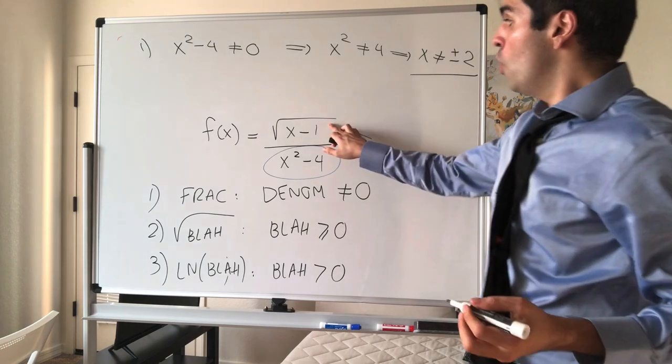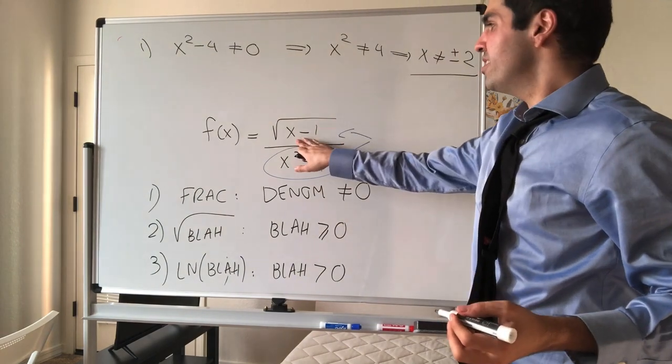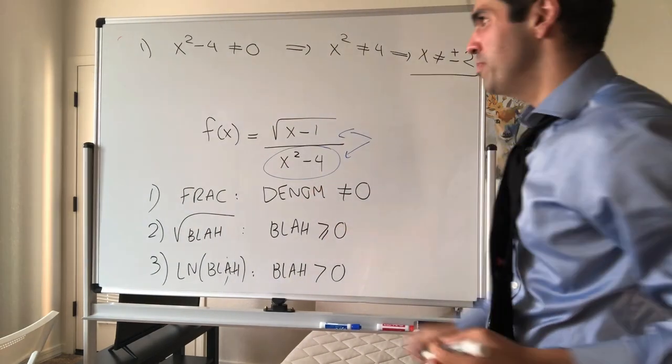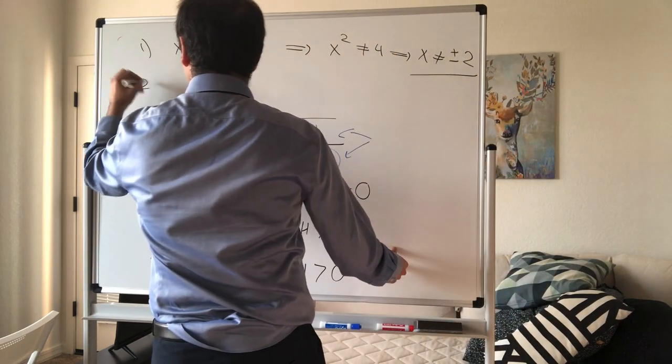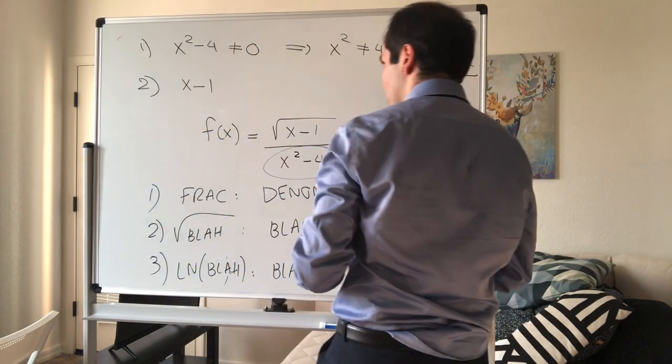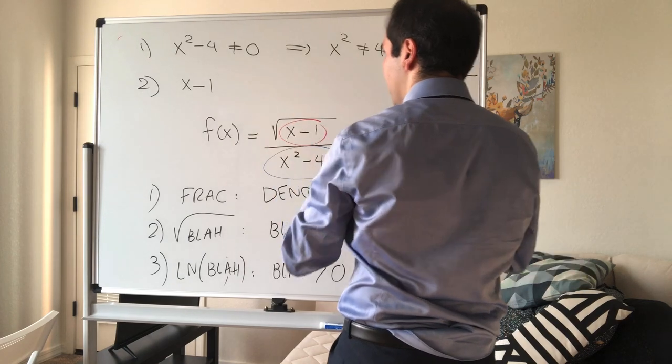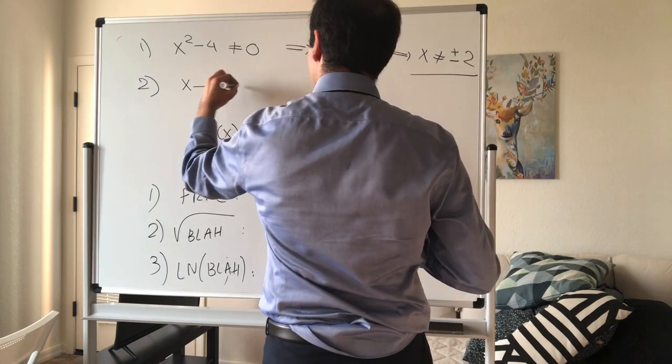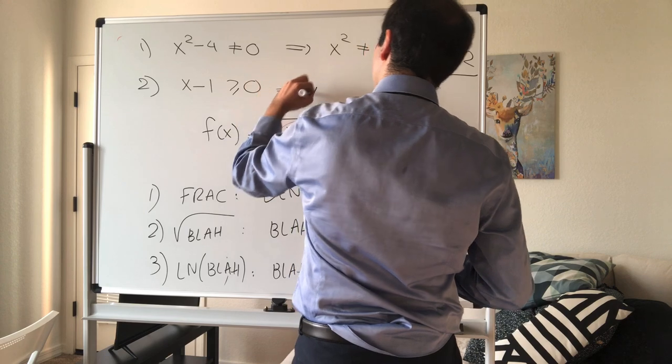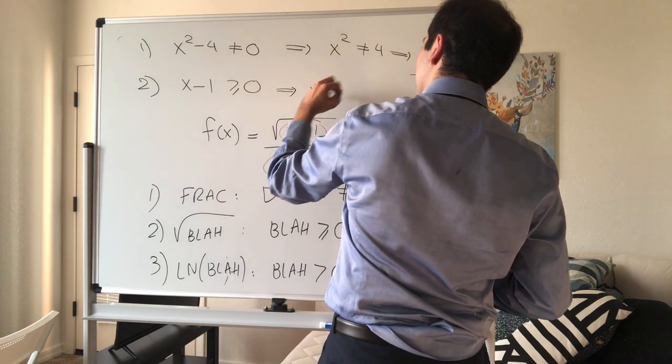Second of all, notice there's a square root. So you want the stuff inside the square root to be non-negative. So you want, in this case, x minus 1 to be non-negative. So it tells you x is greater or equal to 1.